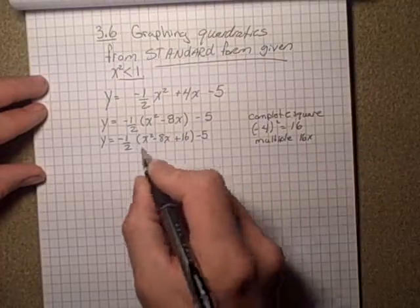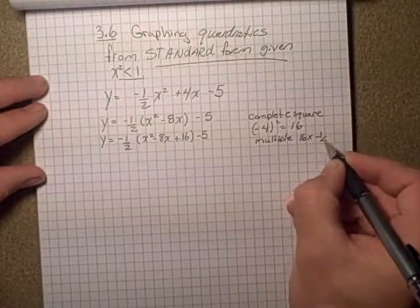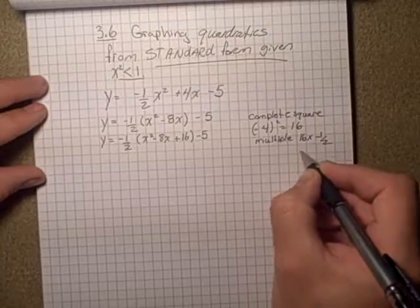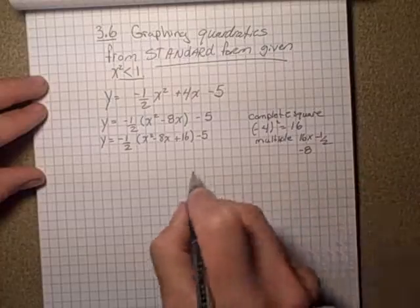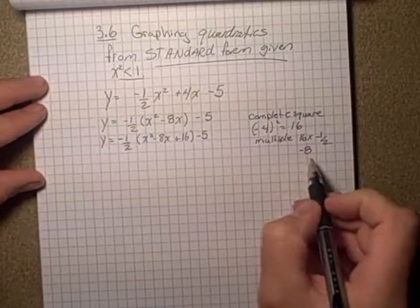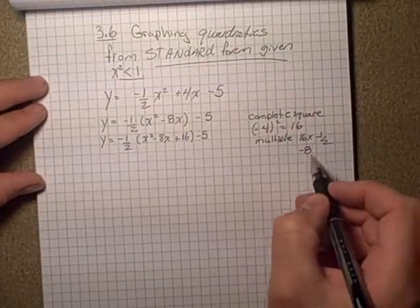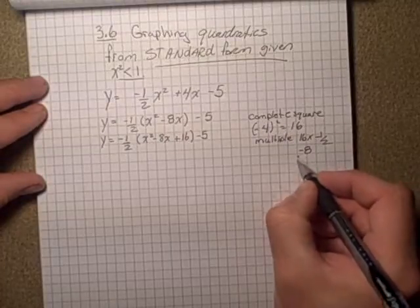So don't forget to multiply 16 by what's out there, and this is negative 8. So take the opposite over here. Since it's a negative 8, we have to add 8 out here to make this equal to 0, therefore add 8.